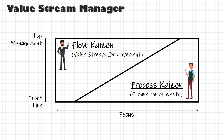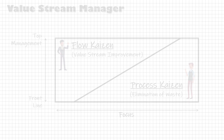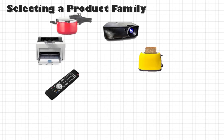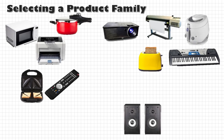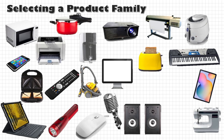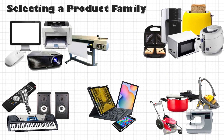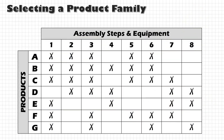Once a value stream manager is identified, the next requirement is to select a product family. You might have a lot of products in your portfolio, but your customer cares about their specific product. So we will not be mapping everything that goes through the shop floor, at least not in the first go. A family is a group of products that pass through similar processing steps. If your product mix is complicated, you can create a matrix with assembly steps and equipment on one axis and your products on the other axis, then choose the products having a similar flow of processes and call them a family.